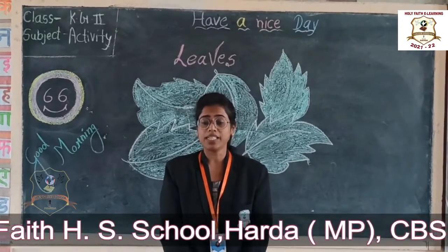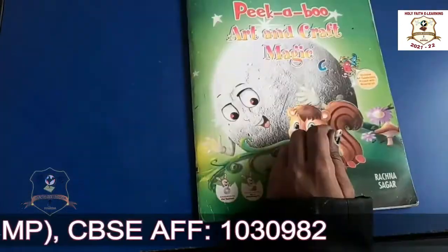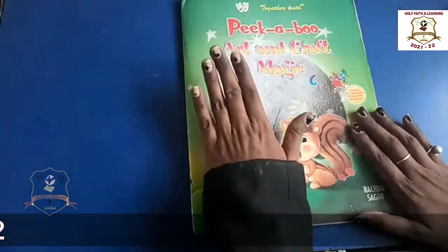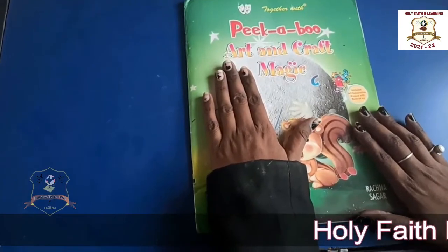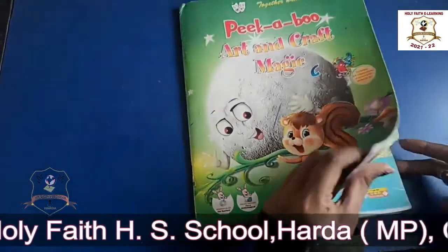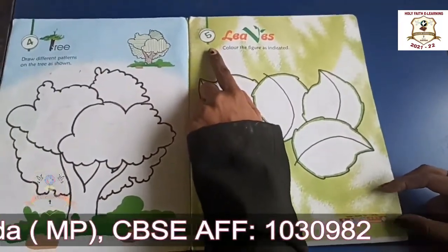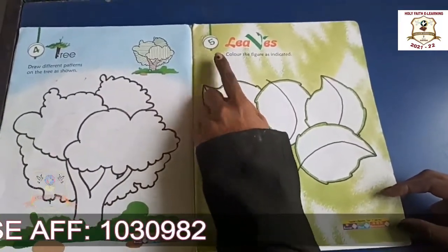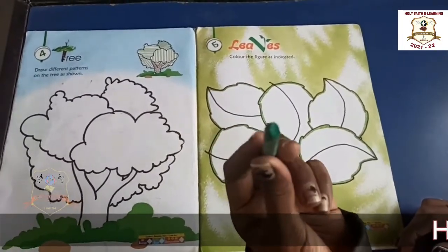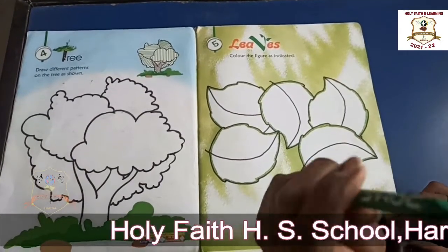Today we will learn to color the leaves. Okay students, look at here. This is your activity book. Take out chapter number 5. Take one green color crayon. We will take green color.